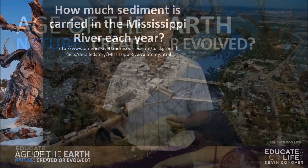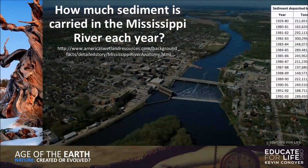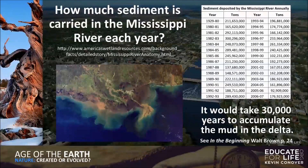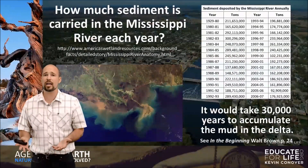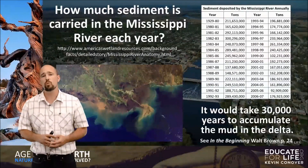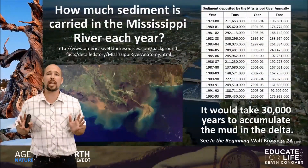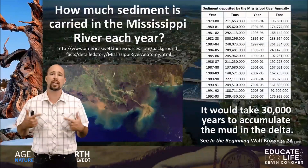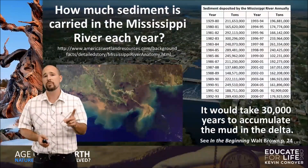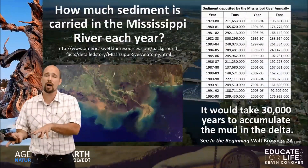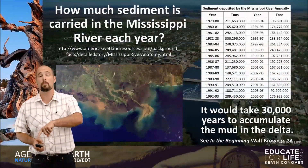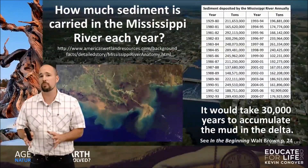How much sediment is carried in the Mississippi River each year? This chart shows how many tons of mud are carried out — it would take 30,000 years to accumulate the amount of mud currently in the Delta. You might ask: if the Bible says it's only 6,000 years, why are there 30,000 years of mud? Most likely the majority of the mud was carried out during the flood as the waters rushed off the continents. As long as the age of the earth is less than 30,000 years, the biblical account makes sense. What doesn't make sense is saying the earth is billions of years old when we only have 30,000 years of mud in the Delta.